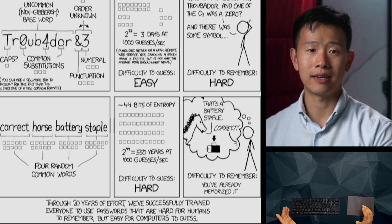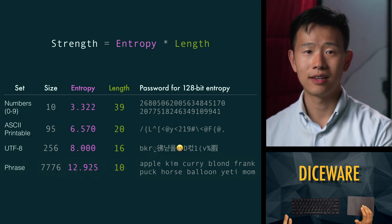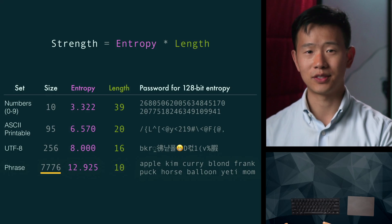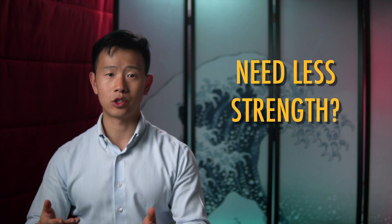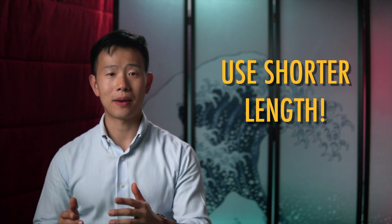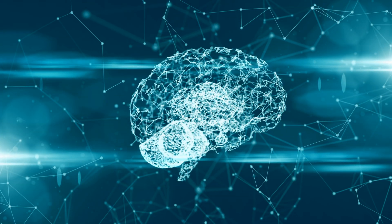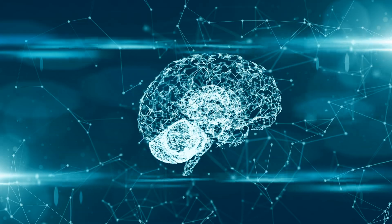This method was popularized by an XKCD comic and referred to as Diceware, since you had to manually roll dice to select words from a dictionary of 7,000-plus words. There may be times when you don't need 128 bits of strength — in that case, just use fewer symbols. A key thing to remember is that passwords have to be randomly generated. Human psychology is actually quite predictable, so just pulling characters or phrases out of your head drastically reduces the password strength.